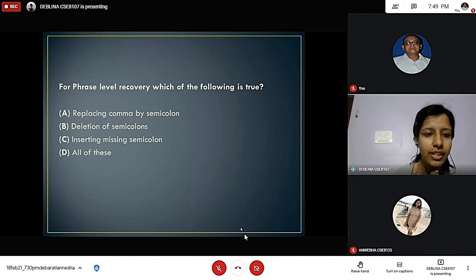The next question is for phrase level recovery which of the following is true? Option A: Replacing comma by semicolon. Option B: Deletion of semicolon. Option C: Inserting missing semicolon. Option D: All of these. The answer is option D, all of these.